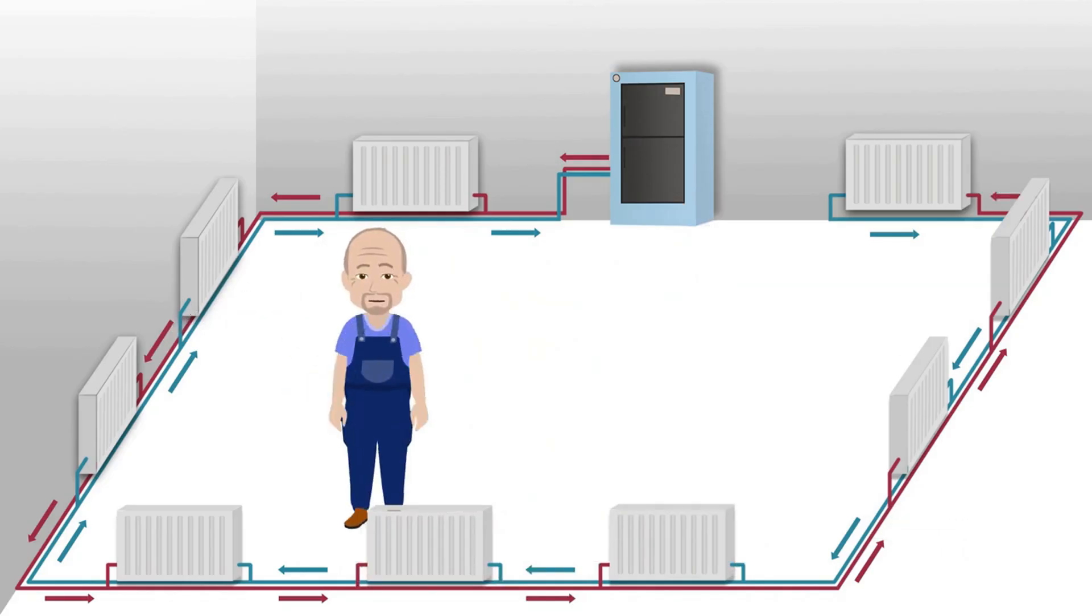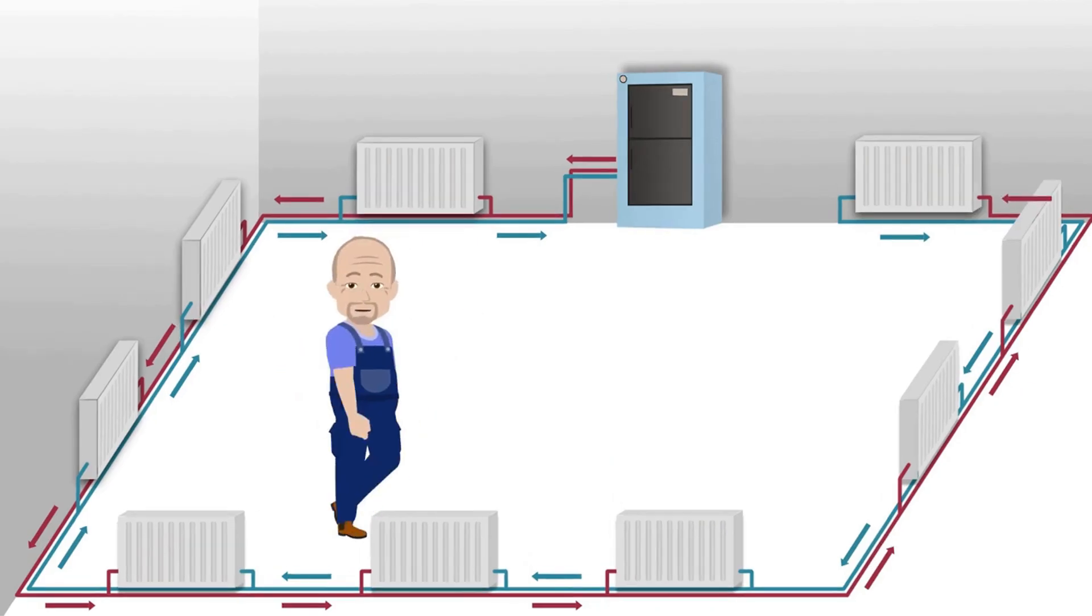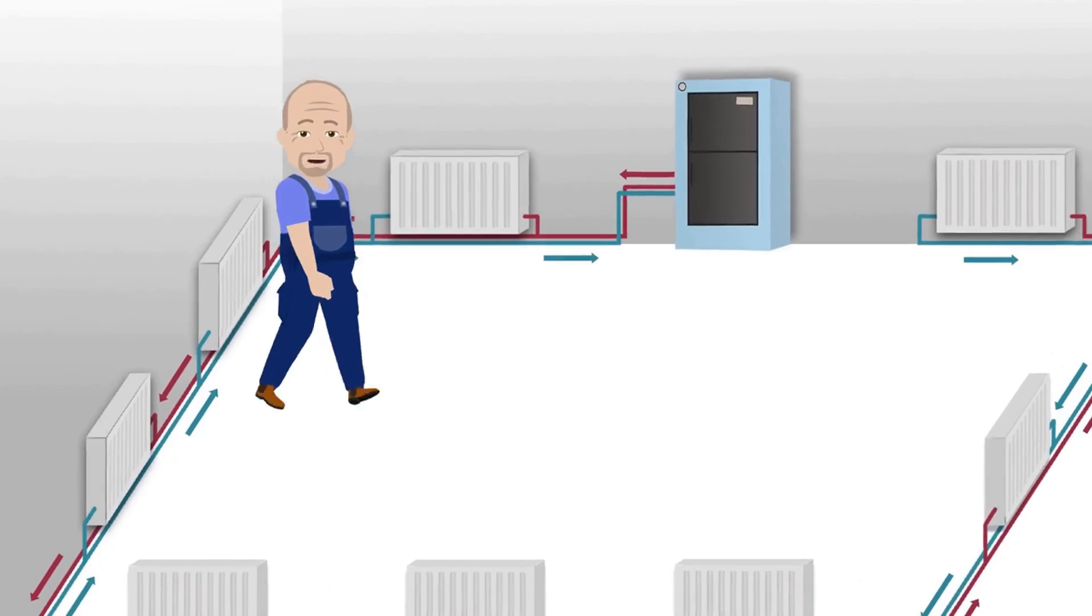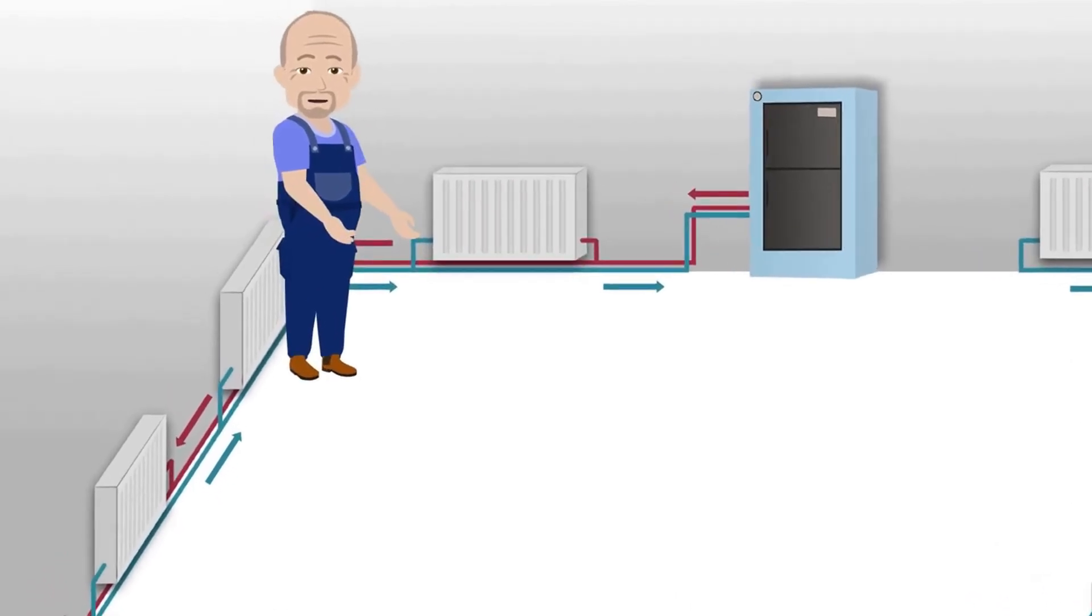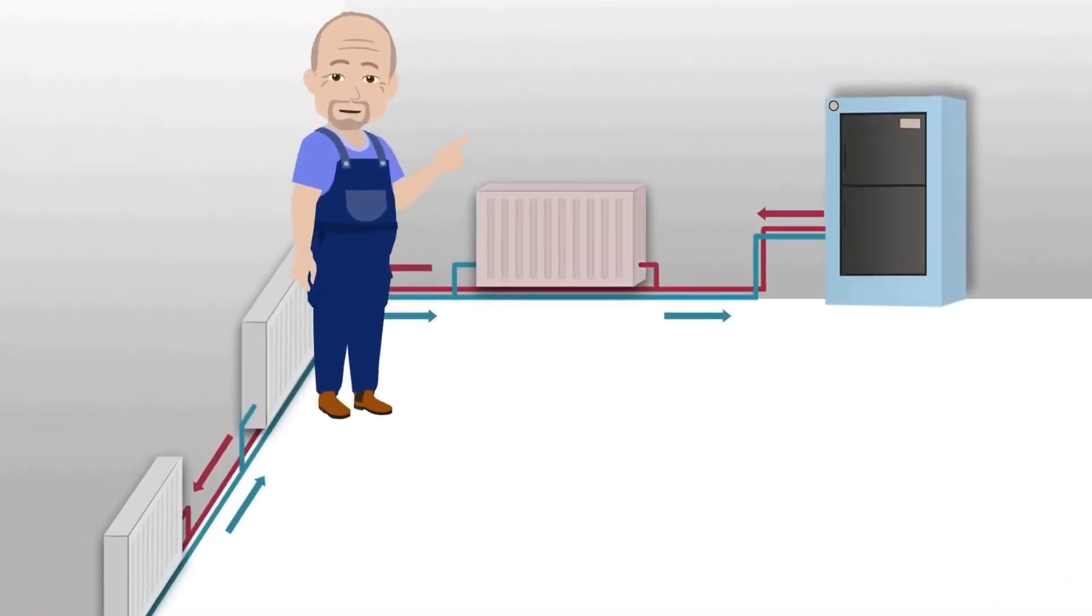Let's take a closer look at how this heating system works. The heated coolant leaves the boiler, goes through a pipe to the first radiator. The radiator heats up completely and then the cooled coolant returns to the boiler through the inlet.